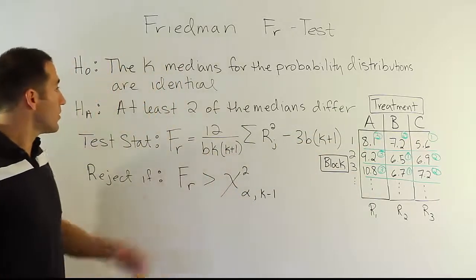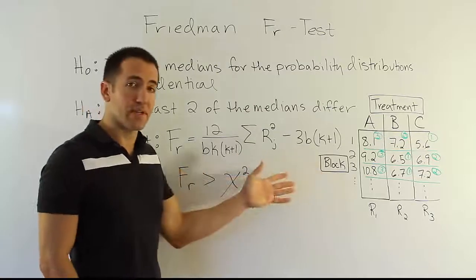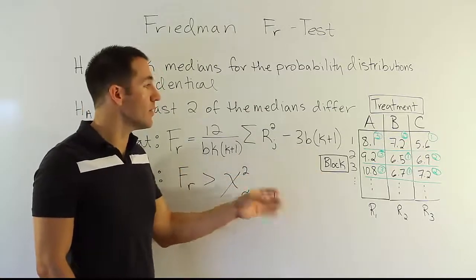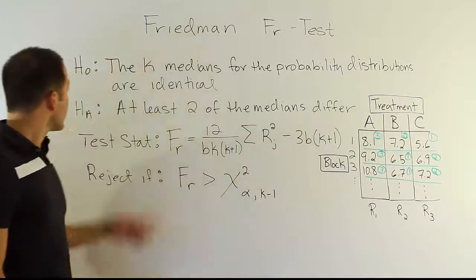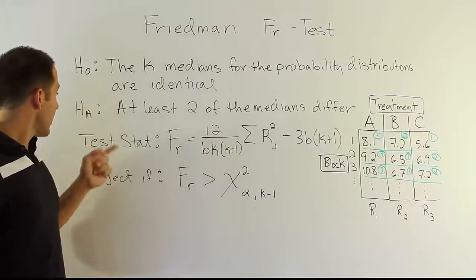So you could test to see if the blocks are significant, but still either way, you're going to assume that there is no interaction effect between the two variables. So those are your H0, your HA.